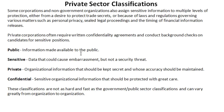Starting off, public is basically analogous to unclassified. This is stuff that you make available to the public — a lot of this can be marketing or information that you want to share with your public or customers. We have three levels of classified information, as it were. Similar to the public sector, sensitive could cause embarrassment — it's information that would cause the least damage. Private is organizational information that should be kept secret and whose accuracy should be maintained. Kind of a crappy definition because all your information should have its accuracy maintained, but this is the safe middle.